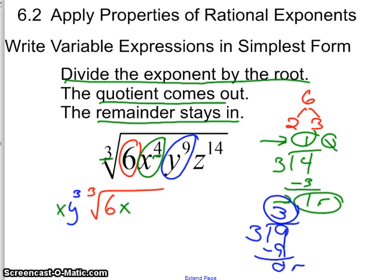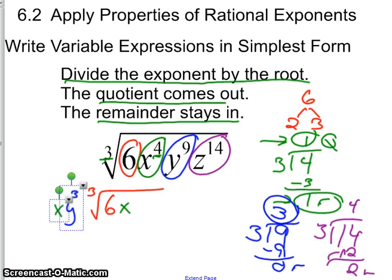Now I'm going to do z. 14 divided by 3 is 4. 4 times 3 is 12. The remainder is 2. So z to the power of 4, because the quotient is 4, comes out, and z to the power of 2, because the remainder of 2 stays in.